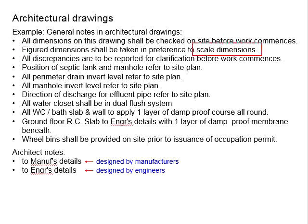Next: all discrepancies are to be reported for clarifications before work commences. Discrepancies refer to contradictions or illogical information given in the architectural drawing where you suspect there are errors. You need to seek clarifications from the architect before work starts. You cannot simply assume certain things, as this can lead to implications such as increased construction costs or project delays. The architect requires you to check the drawing carefully before constructing the building.